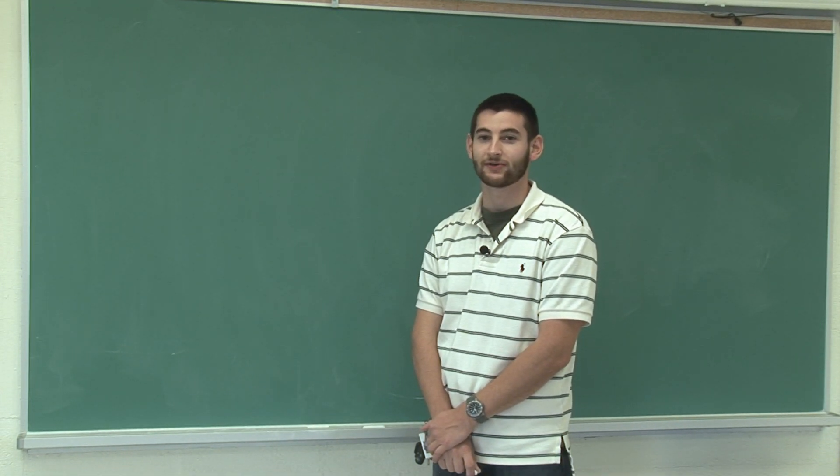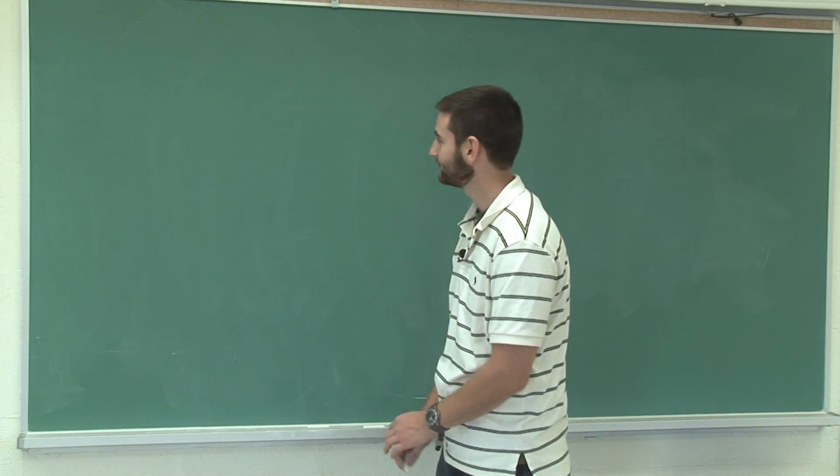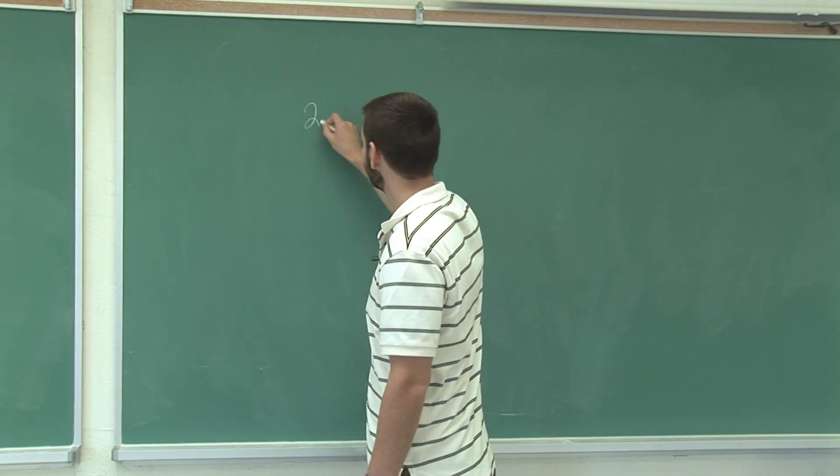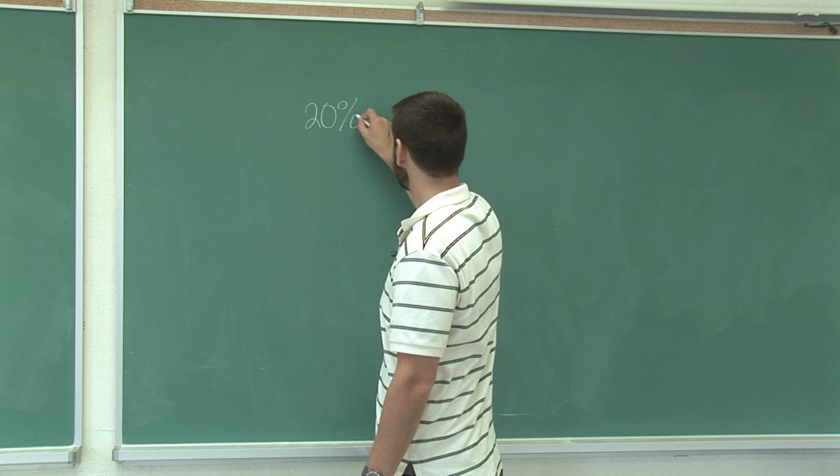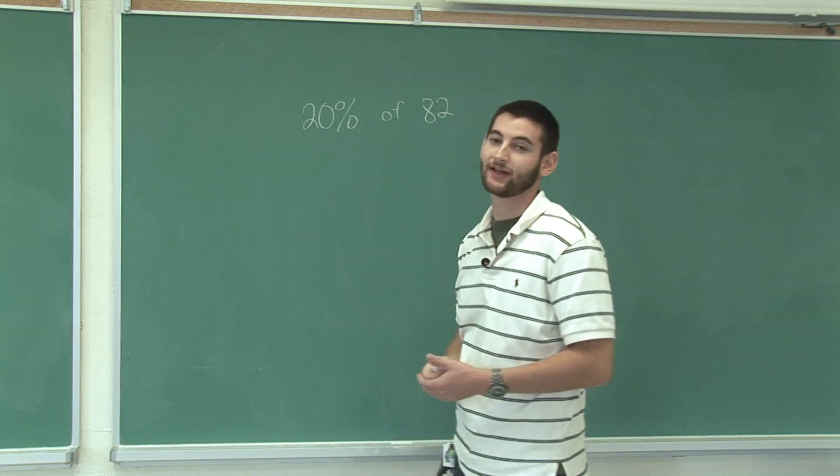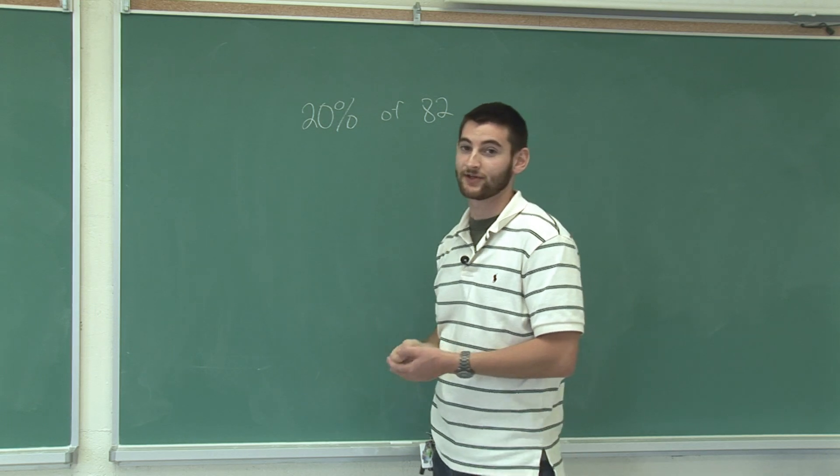Okay, now I'm going to show you how to find percents of whole numbers. To find 20 percent of a number like 82, we first need to realize that 20 percent is the same as 0.20.